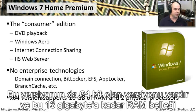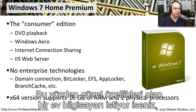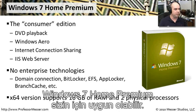Windows 7 Home Premium does support 64-bit processors, up to 16 GB of RAM, and up to two physical CPUs. So if you want a souped-up home computer, Windows 7 Home Premium may be the one for you.